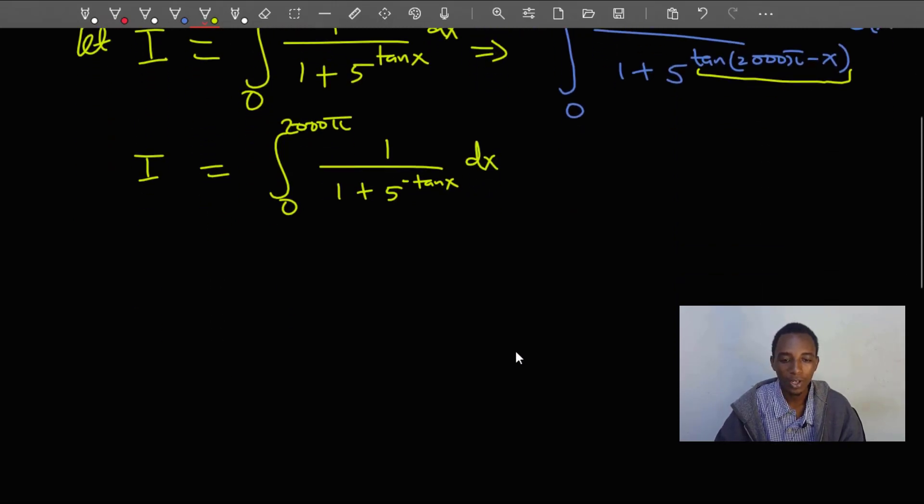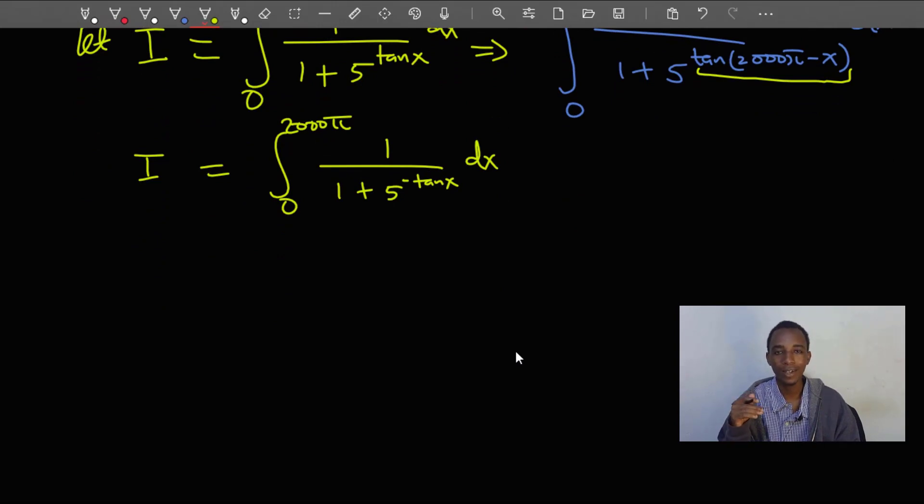What do I do if I get here? I'm going to multiply the numerator and denominator by 5 to the power tan x, and we'll see how that simplifies this. So we have the integral from 0 to 2000π. I multiply here by 5 to the power tan x.